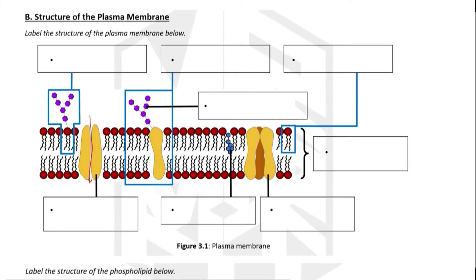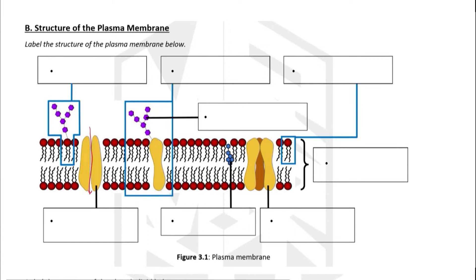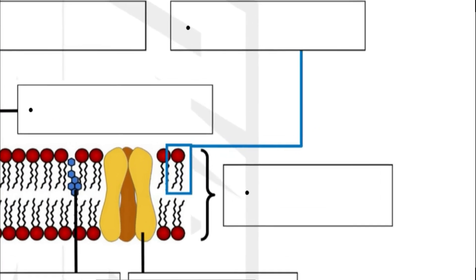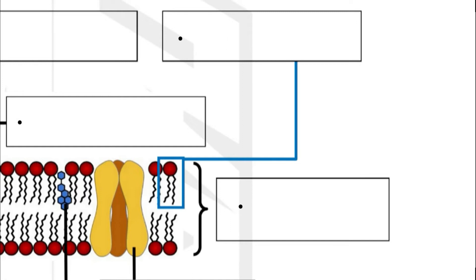First, let's look at the structure of the plasma membrane. As you can see, the main component of the plasma membrane is this red circle that looks like a pin. This is known as the phospholipid.